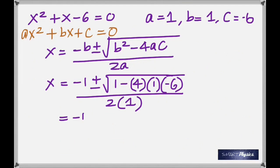And that makes it minus 1 plus or minus square root of 25. Now how do you get the 25? Because you have 1 here minus this is going to be positive 24, because negative 4 times negative 6 is positive 24. So now you have 1 plus 24 which makes it 25, and in the denominator you have 2.